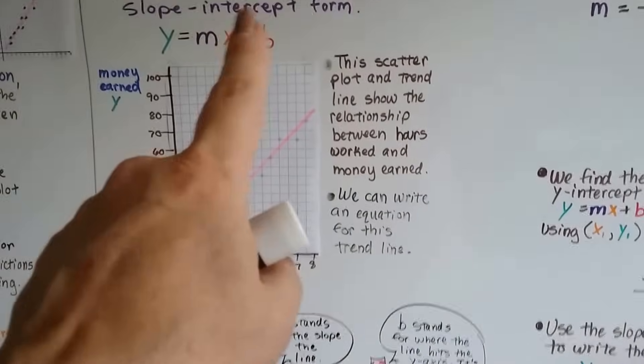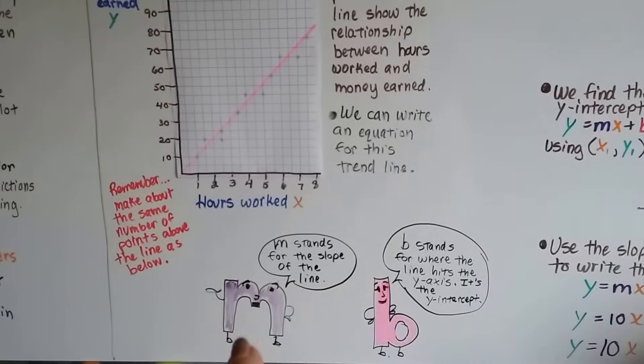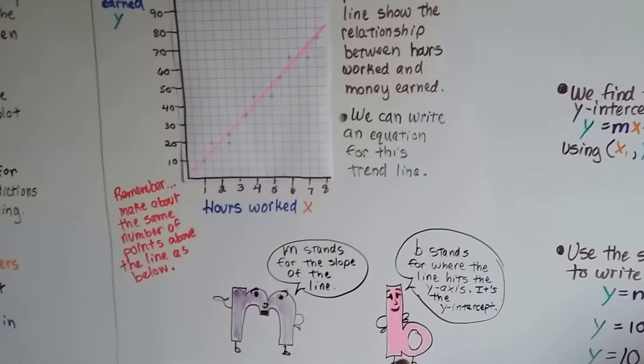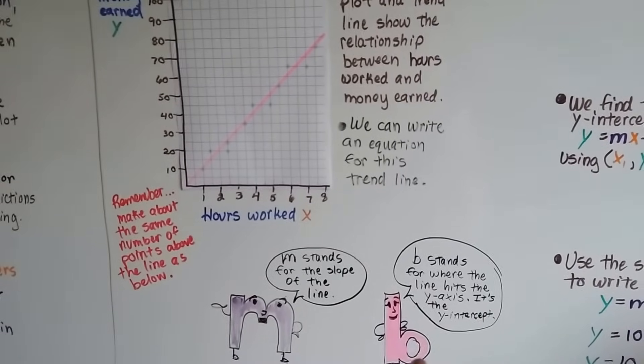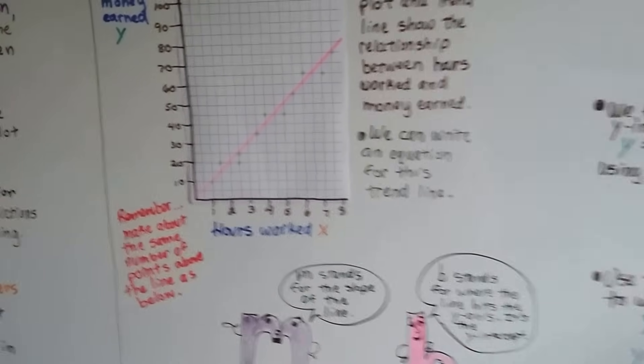And remember, when we're doing this slope-intercept form, the m is going to stand for the slope of the line and the b back here is going to stand for where the line hits the y-axis, where it intercepts that y.